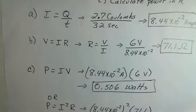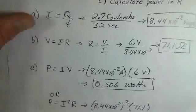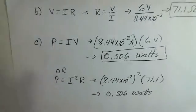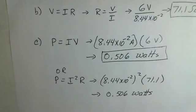If we want to use P equals I squared R, we know the current. We square that current, 8.44 times 10 to the minus 2, square that times the resistance, 71.1 ohms. And again, we get 0.506 watts.